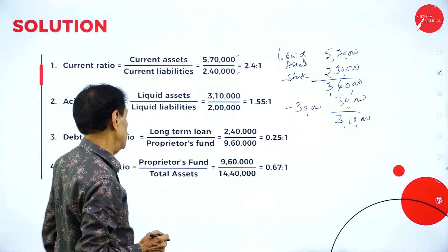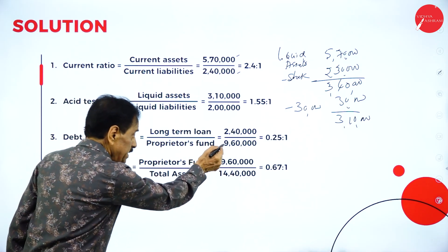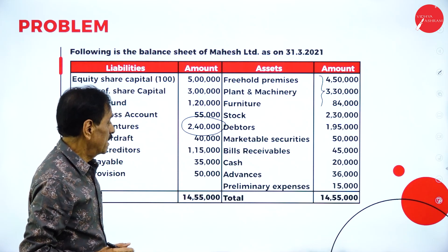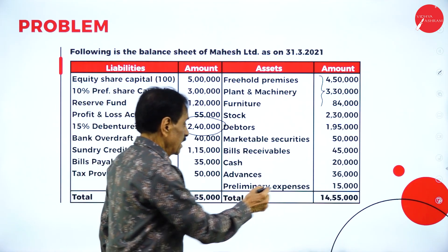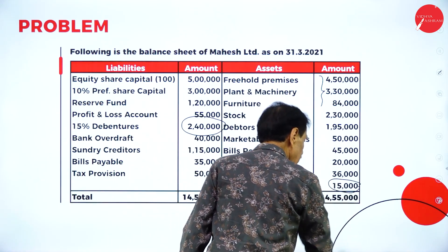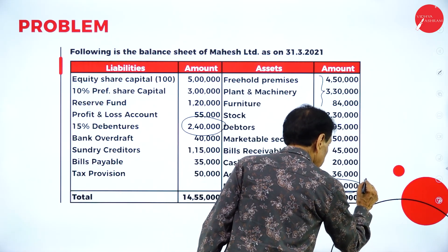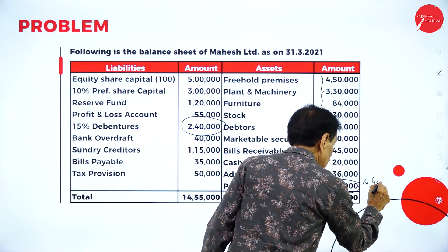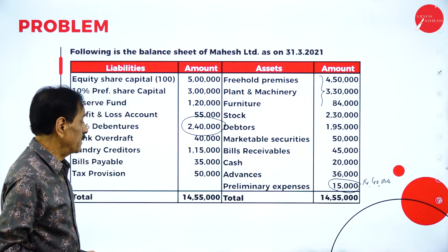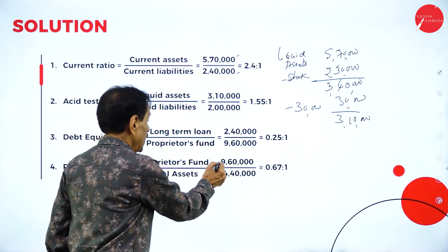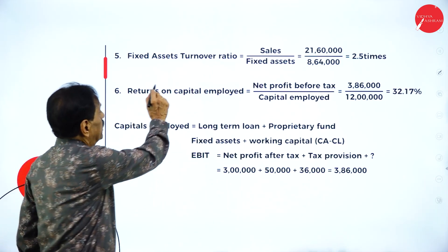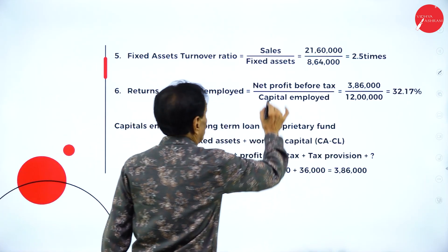For the proprietary ratio, the formula is proprietary fund divided by total assets. Proprietary fund is 9 lakh 60,000. Total assets, excluding preliminary expenses of 15,000, come to 14 lakh 40,000. So proprietary ratio is 9 lakh 60,000 divided by 14 lakh 40,000, giving 0.67 to 1.